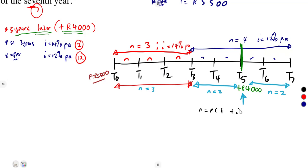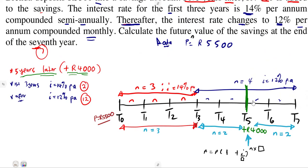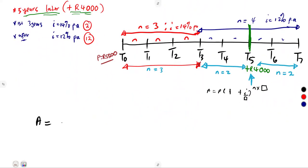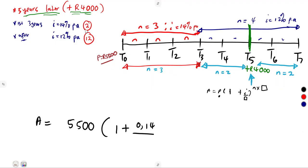This is a compound interest problem. The formula is: Amount = P × (1 + i/n)^(n×t). The future value starts with our principal of $5,500, increasing for three years at 14% per annum compounded semi-annually — that is (1 + 0.14/2)^(3×2), which gives an exponent of 6.